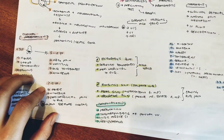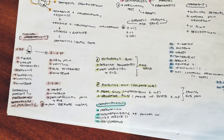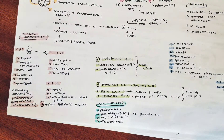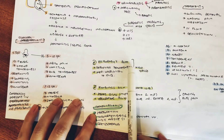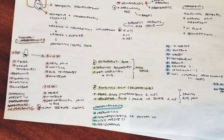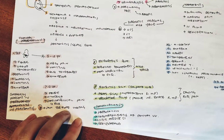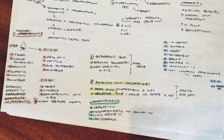Moving on to physical examination — McBurney's point and Rovsing's sign are very high yield and commonly asked. McBurney's point is where the patient is most tender, located in the right lower quadrant. There is rebound tenderness, and it is a periumbilical pain that has migrated to the right lower quadrant. These three points are high yield.